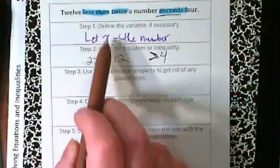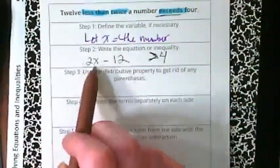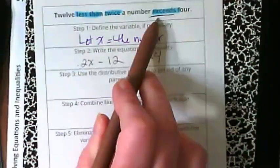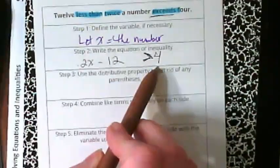And what is it less than? It's less than twice a number. And we've said that x is our number, so we've got 2x, that's the twice a number. 12 less than it exceeds, that means it's greater than 4.